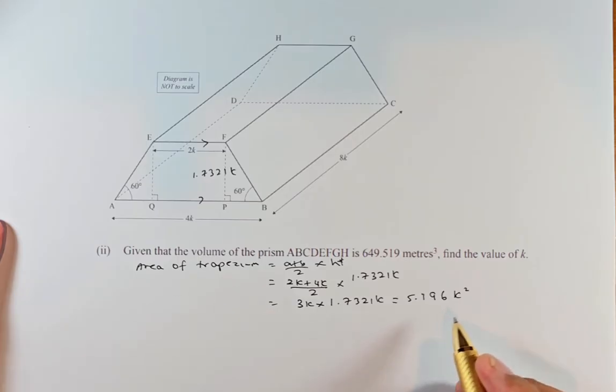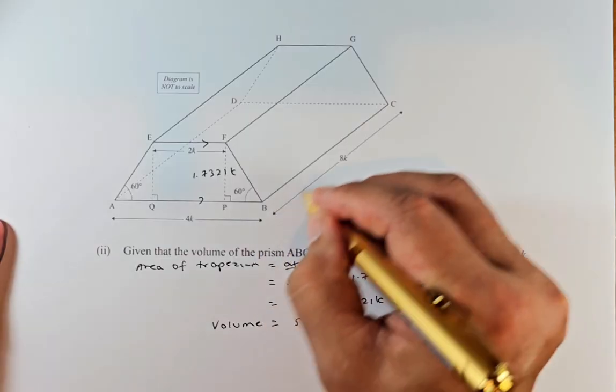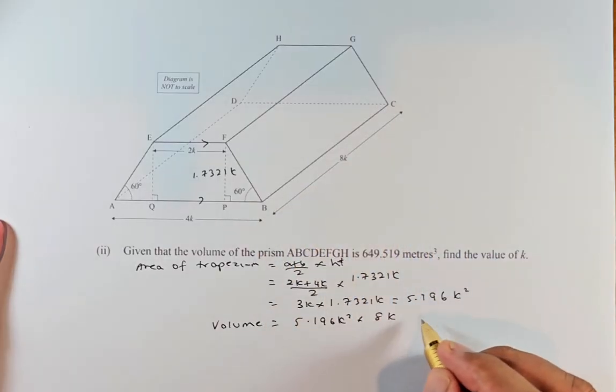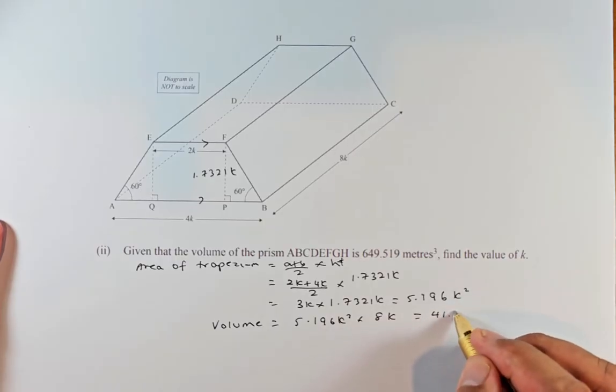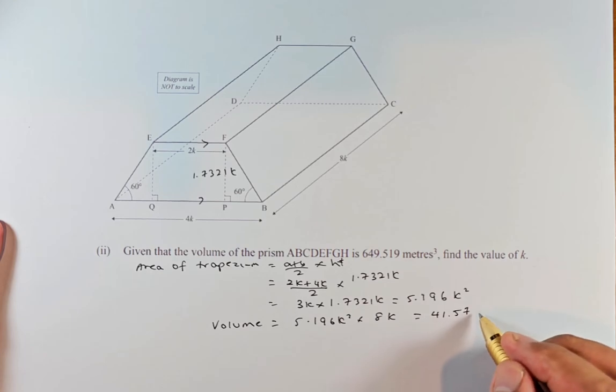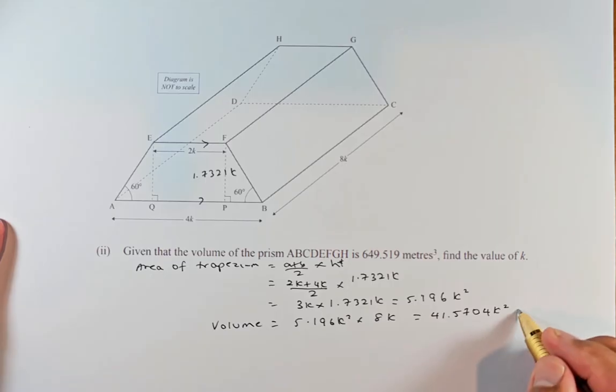Now we know the area of this trapezium is going to be 5.196k squared, so we need to find the volume. Volume of that trapezium is just going to be 5.196k squared multiplied by 8k.